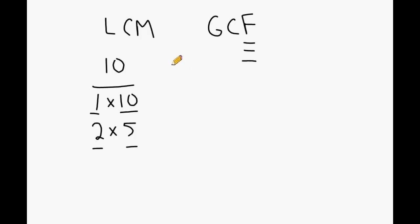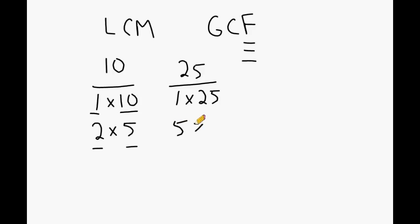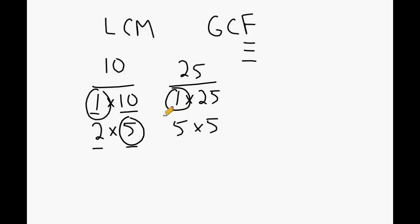Let's take a look at factors that fit inside the number 25. One factor pair that will produce 25 is 1 and 25, and another pair is 5 times 5. Now if you look at the numbers 10 and 25 and identify factors that are common to both, 1 is a common factor — in fact 1 is common to all numbers. 5 is also a common factor, and those are the only common factors of 10 and 25. Out of those, 5 is the greatest common factor.